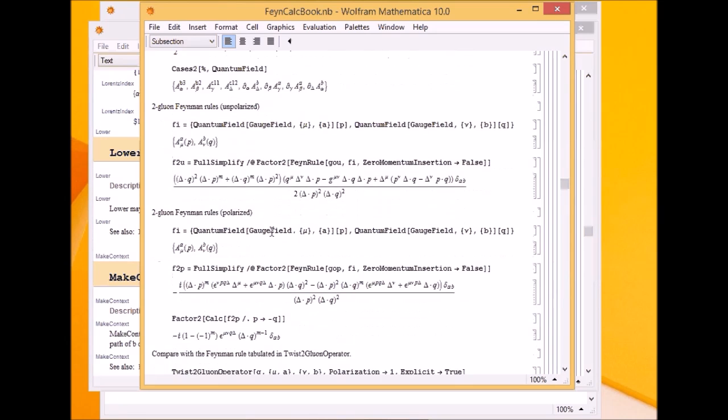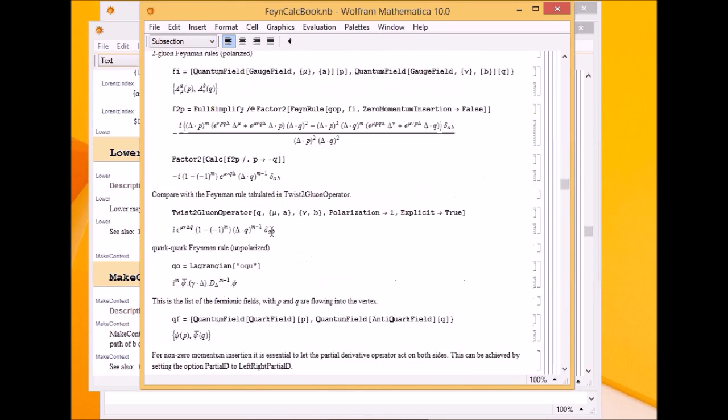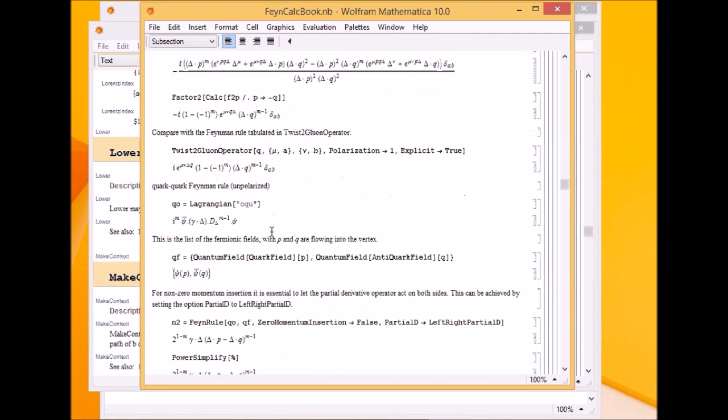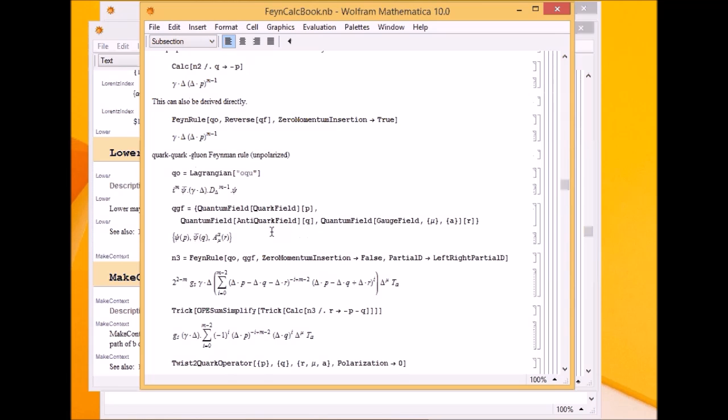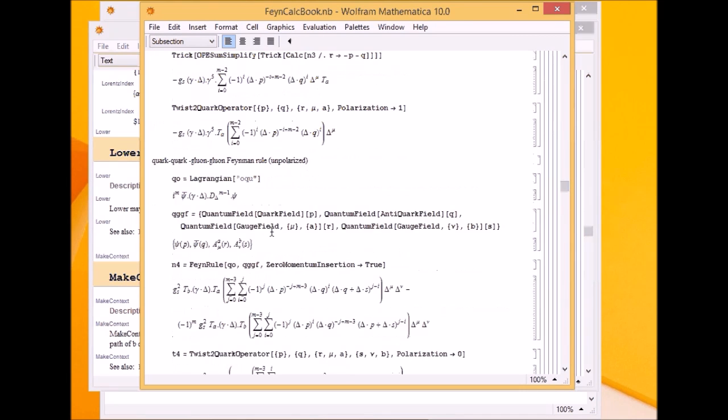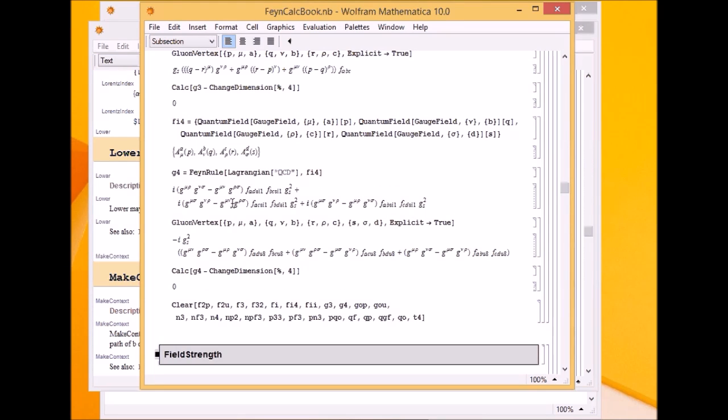There is a function called FeynRule. So this calculates the Feynman rule. You can see how it's applied. If you've done the QCD calculation, the Feynman rules for non-Abelian gauge theory were huge, and the derivation would take 10-20 pages. Here you can directly see the Feynman rules for 3-point gluon amplitudes and 4-point gluon amplitudes without doing any calculation. So the package does the job for you.